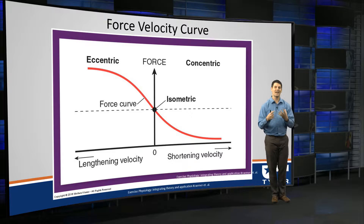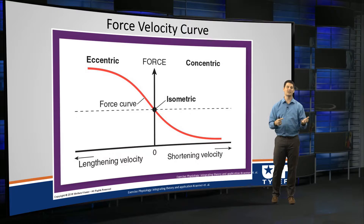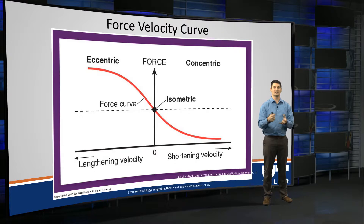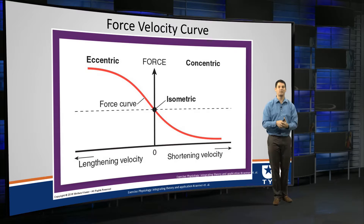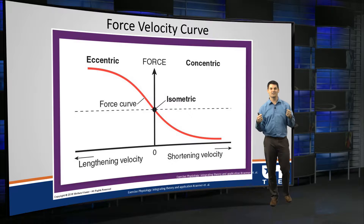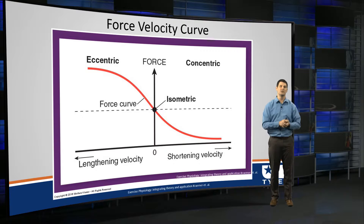As you begin to produce more and more force through an eccentric contraction, or as the lengthening velocity begins to increase, you start to pull on these rubber band-type connective tissues that surround the muscle. This force is called passive force. So now we're adding an active force generation happening inside the actin and myosin cross bridges to a previously unused passive force. That passive force is like stretching a rubber band — the more you pull on it, the harder it is to extend. That connective tissue now adds to the force, and we're able to generate more force in an eccentric contraction than a concentric contraction.